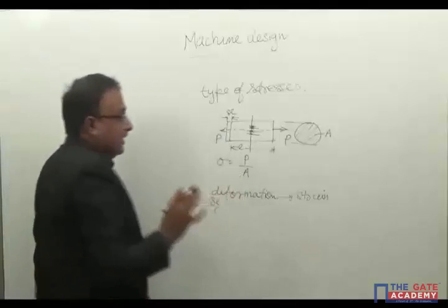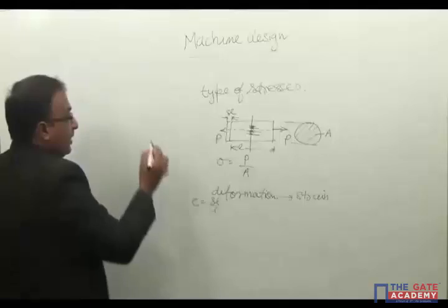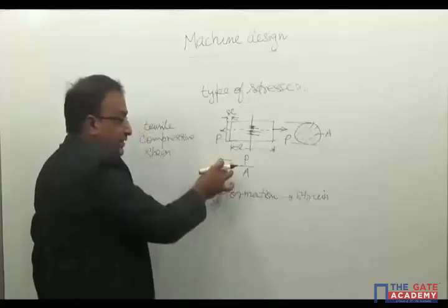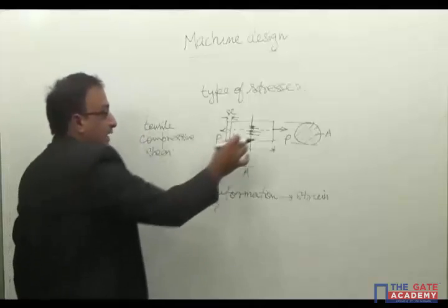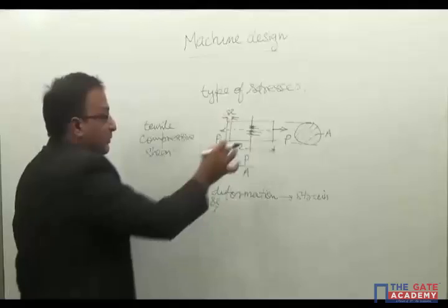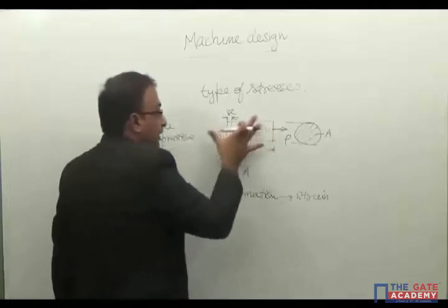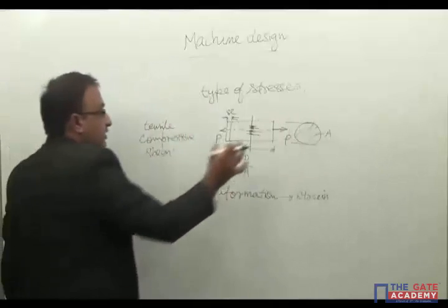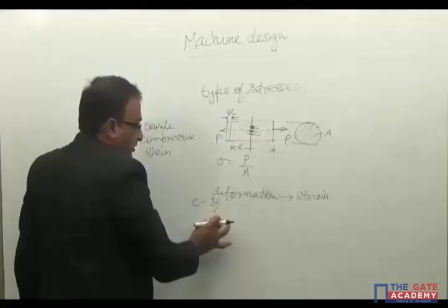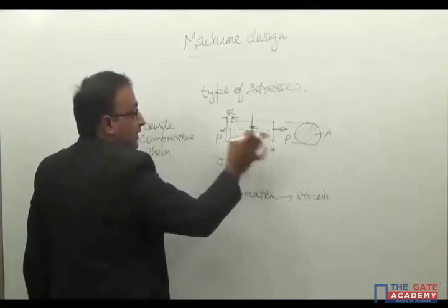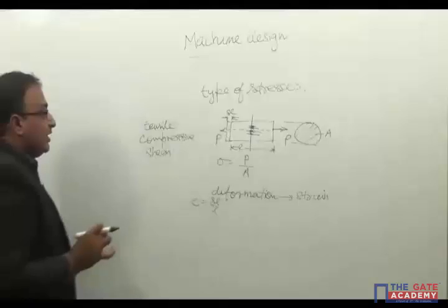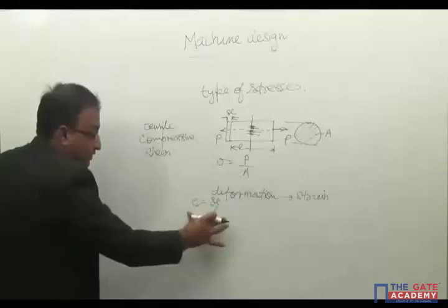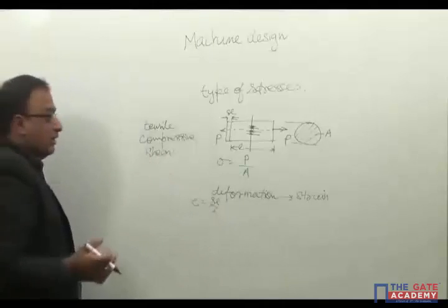Strain may be tensile, compressive, or shear depending on the type of load. If a tensile load is applied, the stress and strain will be tensile and the dimension will increase. If the load is compressive, the stress will be compressive and the strain will be negative — the dimension will decrease. If it is a shear-type load, the stress will be shear stress and the strain will be shearing strain.